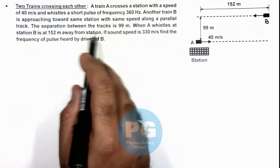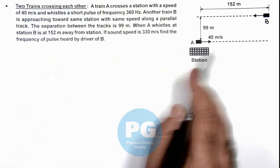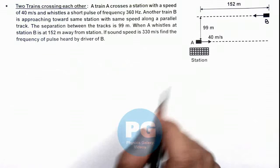Train B moves along a parallel track, and the separation between the tracks is given as 99 meters. When A whistles at the station, B is at 152 meters away from the station. If sound speed is given, we are required to find the frequency of pulse heard by driver B.